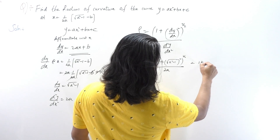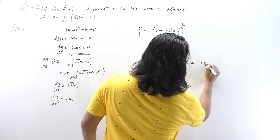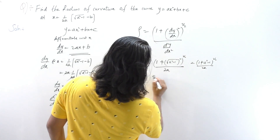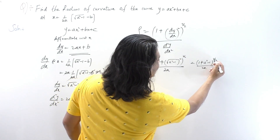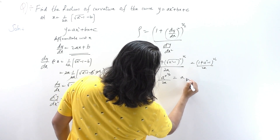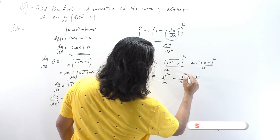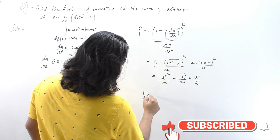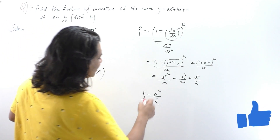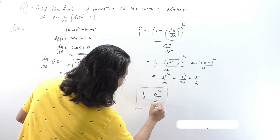Now applying the formula: ρ = (1 + (dy/dx)²)^(3/2) / (d²y/dx²). Substituting dy/dx = √(a²-1), we get (1 + (a²-1))^(3/2) / 2a = (a²)^(3/2) / 2a = a³ / 2a = a²/2. Therefore, the radius of curvature is ρ = a²/2.